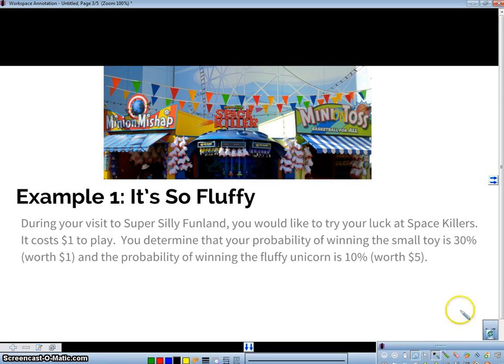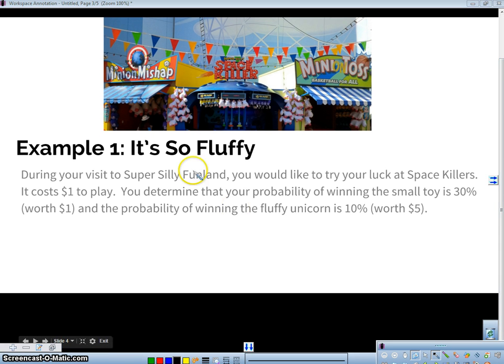All right, so let's take a look at an example. It's so fluffy. That's the part in the movie where Gru and the girls go to a super silly fun land and play the game called space killers. And if you remember, Gru ends up winning the fluffy unicorn. Well, let's suppose that you go to super silly fun land and you'd like to try your luck on space killers. It costs a dollar to play and you determine that your probability of winning a small toy is 30% and a small toy is worth a dollar. The probability of winning a big fluffy unicorn is 10% and those are worth five dollars. So what we want to do is we want to draw the probability distribution or the probability model, the random variable model for this situation.